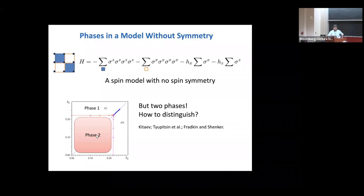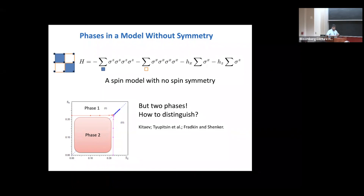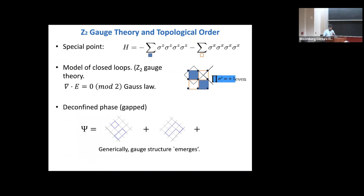With phases of matter, there's always the question: did you work hard enough? Maybe there is some other path in this Hamiltonian that takes you from phase one to phase two, and they are actually secretly connected. Ultimately you have to come up with a positive signature — something that is clearly one or zero, one in this phase and zero in the other — which cannot change smoothly as you go between them. We will discuss such a signature.